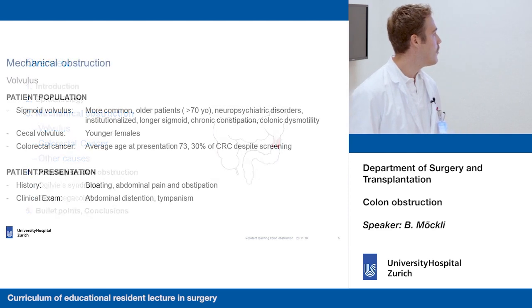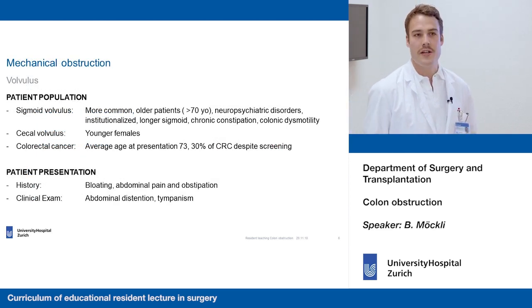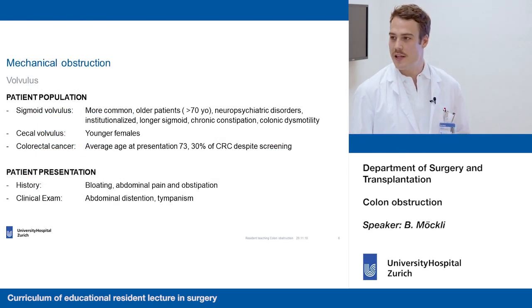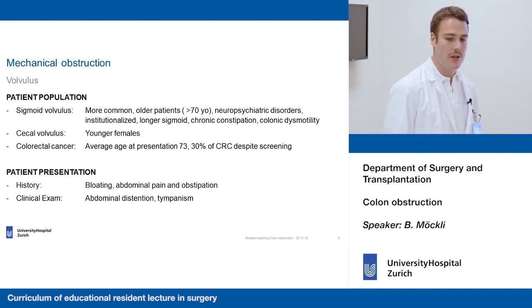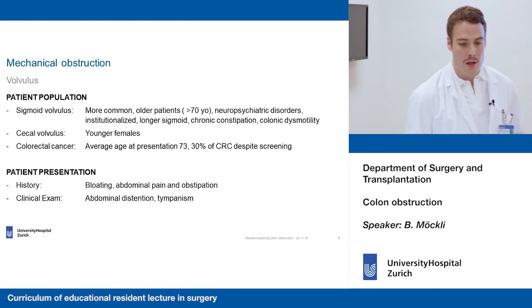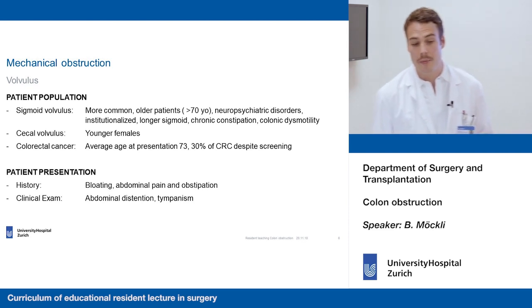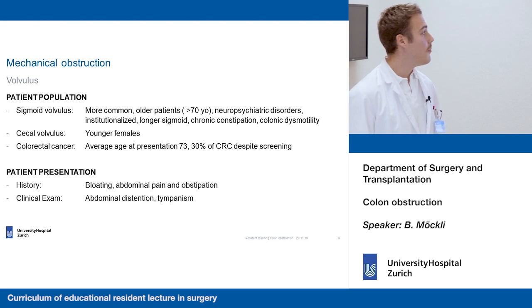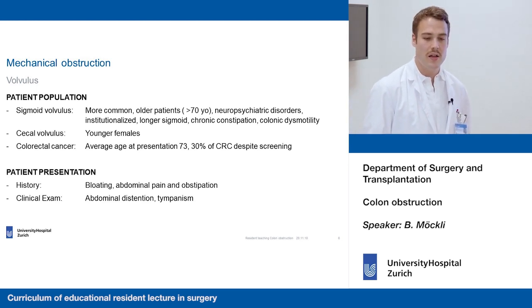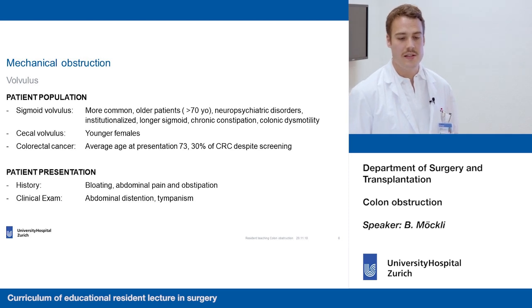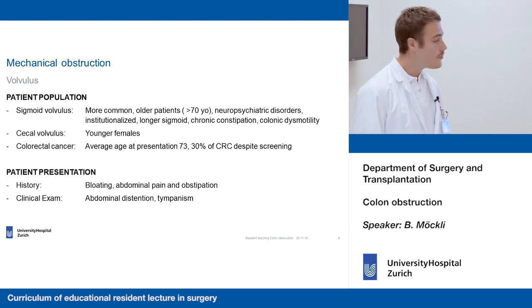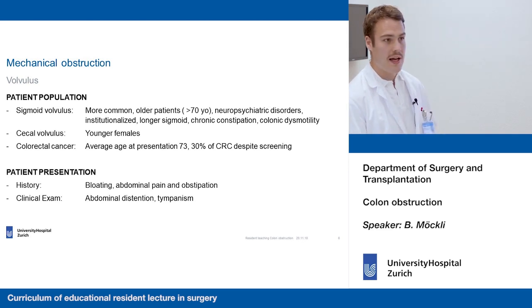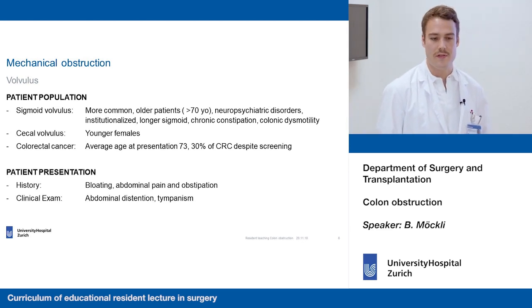For mechanical obstruction, what's the patient population we're dealing with? For sigmoid volvulus, these are more commonly older patients, more than 70 years of age. They have some kind of neuropsychiatric disorder as a risk factor, are often institutionalized, and have chronic constipation and some kind of chronic dysmotility. A longer sigmoid colon is also a risk factor.